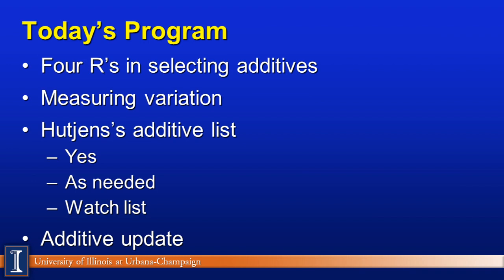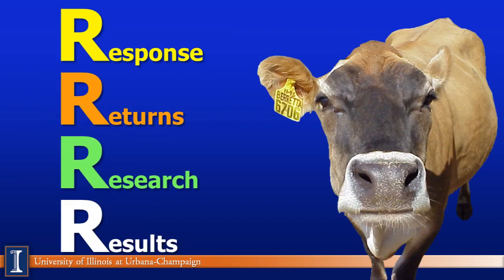Today we're going to cover the Four R's in selecting feed additives. First, how do you measure variation — this gets a little heavy-duty, but hang on. Then we'll go to my additives list broken into three different categories, and finish with an additive update in the sprint round. The Four R's are: Response, Return, Research, and Results.